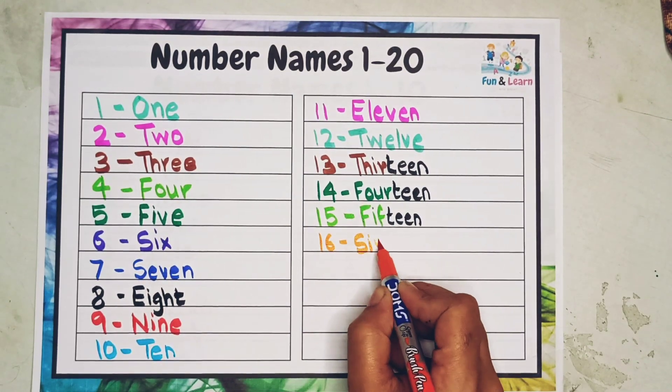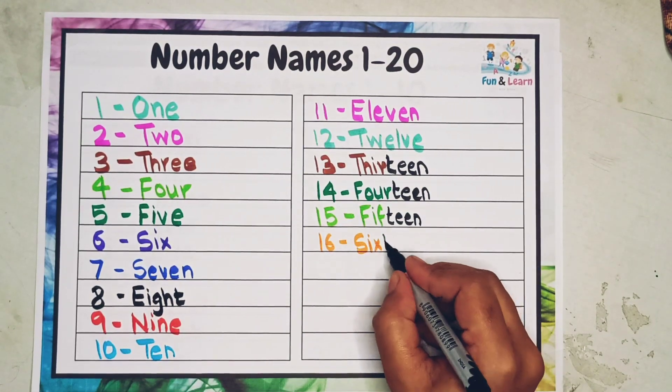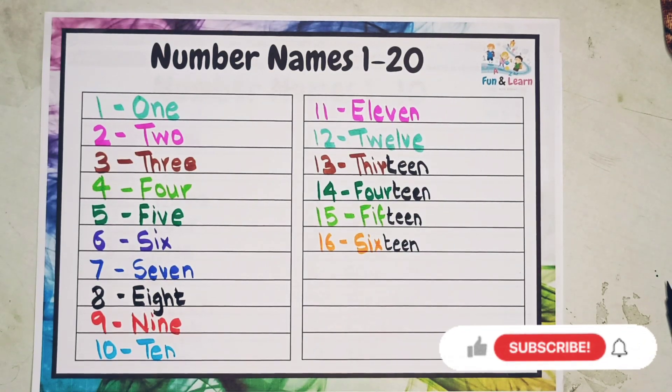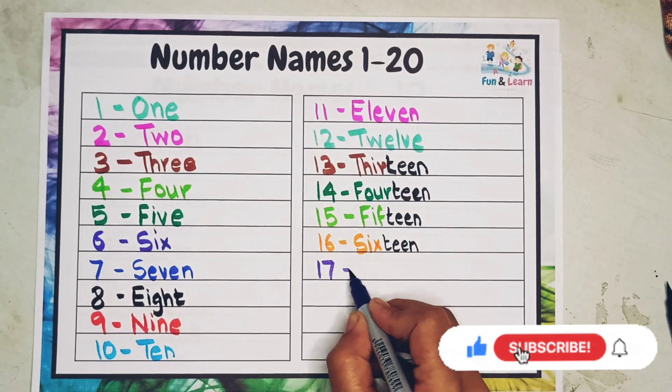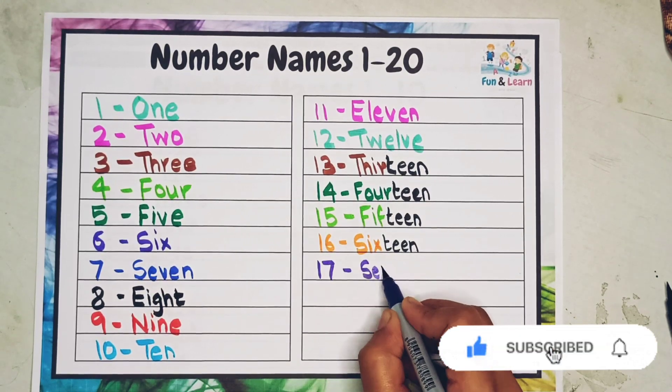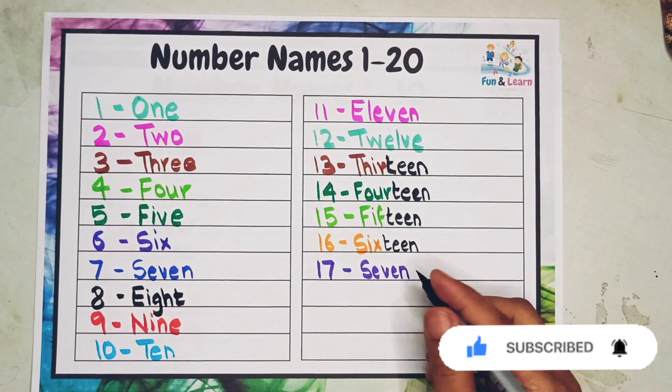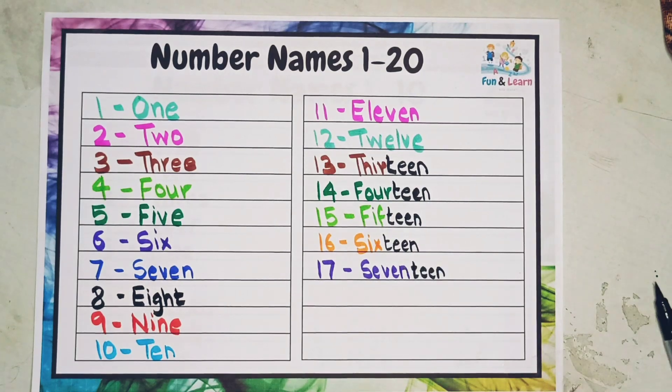16: S-I-X-T-E-E-N, sixteen. S-I-X-T-E-E-N, sixteen. Next is 17: S-E-V-E-N-T-E-E-N, seventeen. S-E-V-E-N-T-E-E-N, seventeen.